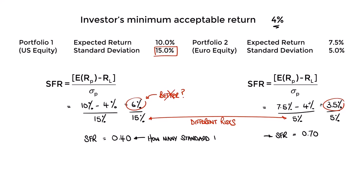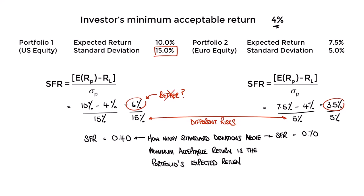The resulting ratio tells us how many standard deviations above the minimum acceptable return the portfolio's expected return is. As we want as much cushion as possible, we want the safety first ratio to be as high as possible — the bigger the better. In this case, the safety first ratio ranks portfolio two, with a ratio of 0.7, above portfolio one with its ratio of only 0.4. Portfolio two's expected return is 0.7 standard deviations above the minimum threshold, whereas portfolio one's is only 0.4.